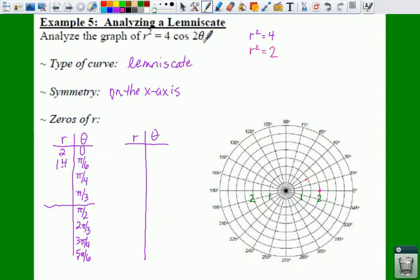Plug in a pi over four. Two times pi over four is a pi over two. Cosine of pi over two is zero. So if we take zero times four, that's zero. Square root of zero is zero. So you're back to your origin. Right here.